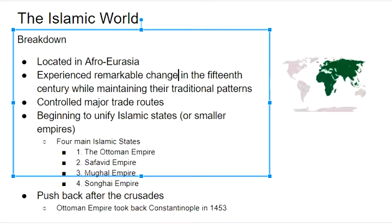The four main empires we're going to look at today are the Ottoman Empire, the Safavid Empire, the Mughal Empire, and the Songhai Empire. We do see a little bit of pushback after the Crusades. Similar to the Mongol rule in China and the Ming dynasty gaining power to push out the Mongols, we see these Islamic empires gaining strength as they push out the Christians after the Crusades.